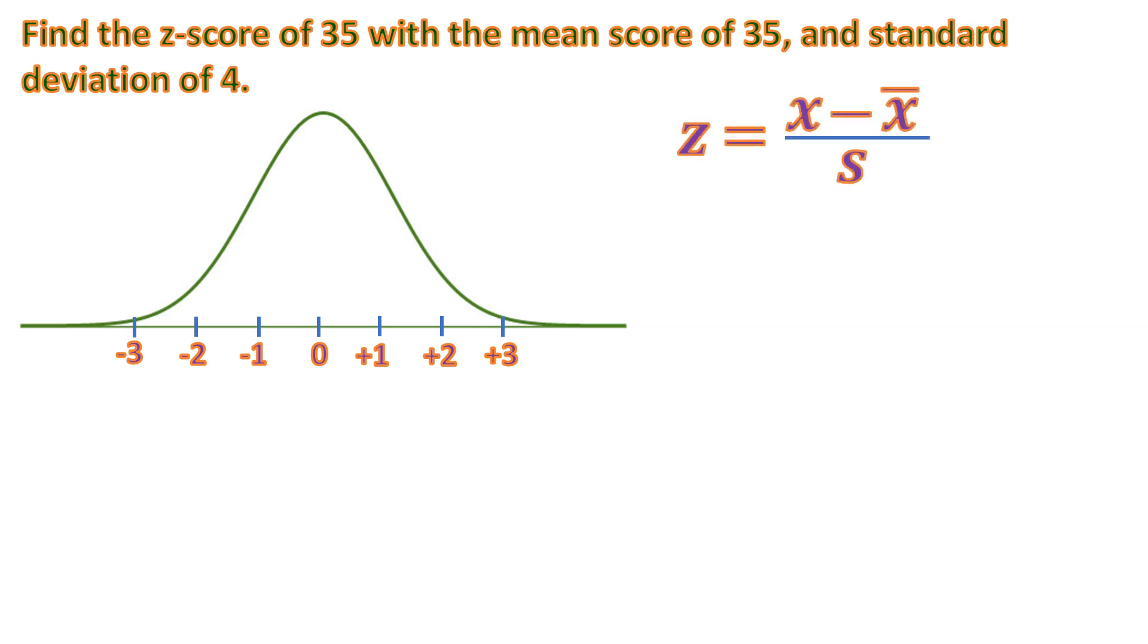So let's use the same formula and substitute. So it's going to be 35. That's the x. And the mean is also 35. Divided by the standard deviation of 4. So this will be equal to 0 divided by 4. So the z will be now 0 divided by 4 or 0 divided by any number except for 0. It's 0.